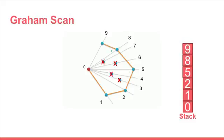The next point is 9. We see a left turn. So 9 is added to the stack. It contains 0, 1, 2, 5, 8, and 9.